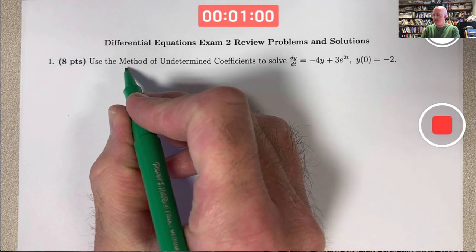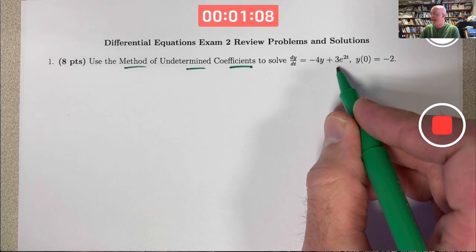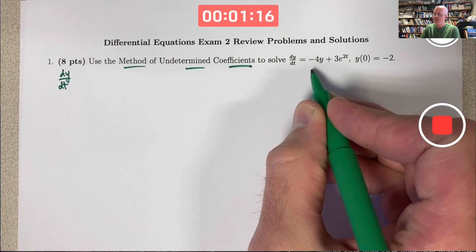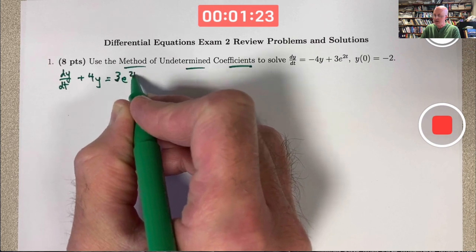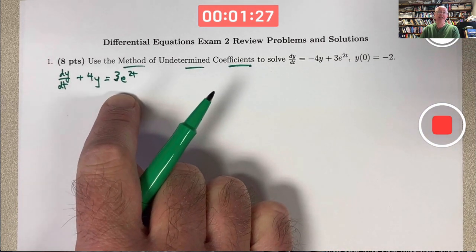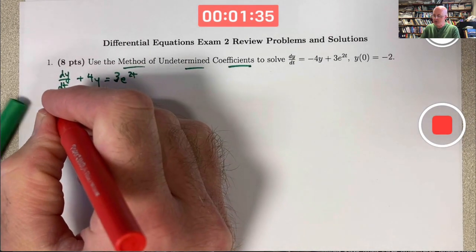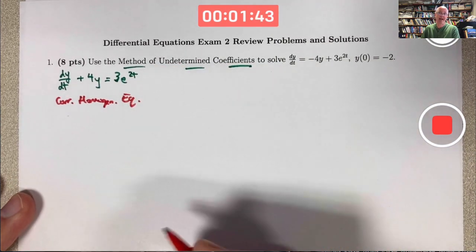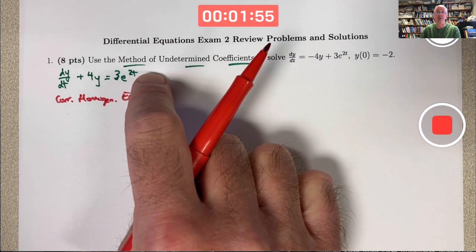The very first problem says to use the method of undetermined coefficients to solve this first order linear differential equation that is also non-homogeneous because of the 3e to the 2t power. If you rewrite this differential equation in linear operator form by adding 4y to both sides, it will be dy/dt plus 4y equals 3e to the 2t, and this is non-homogeneous because the right-hand side is non-zero. To solve this with the method of undetermined coefficients, the first step is to consider the associated homogeneous equation where you make the right-hand side 0. Its general solution, by some theory involved in a proof we'll do later, does allow us to justify considering it to help us find the general solution of the equation we're interested in.